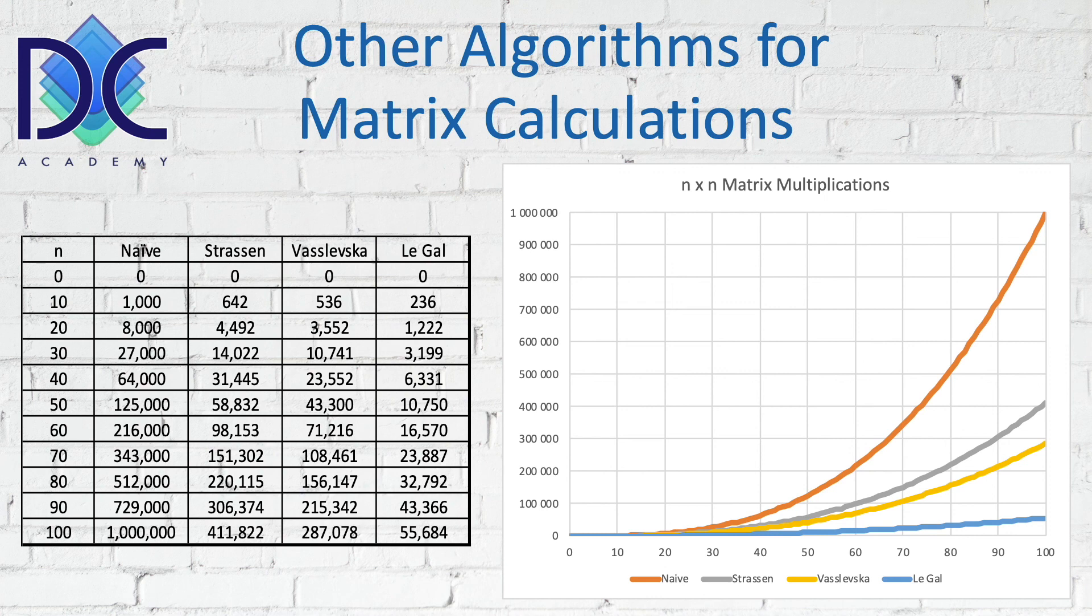And when we finally go to the method of Legal, we see that that 1 million number of calculations is reduced to 55,684 calculations. So that's quite an important step that we have.